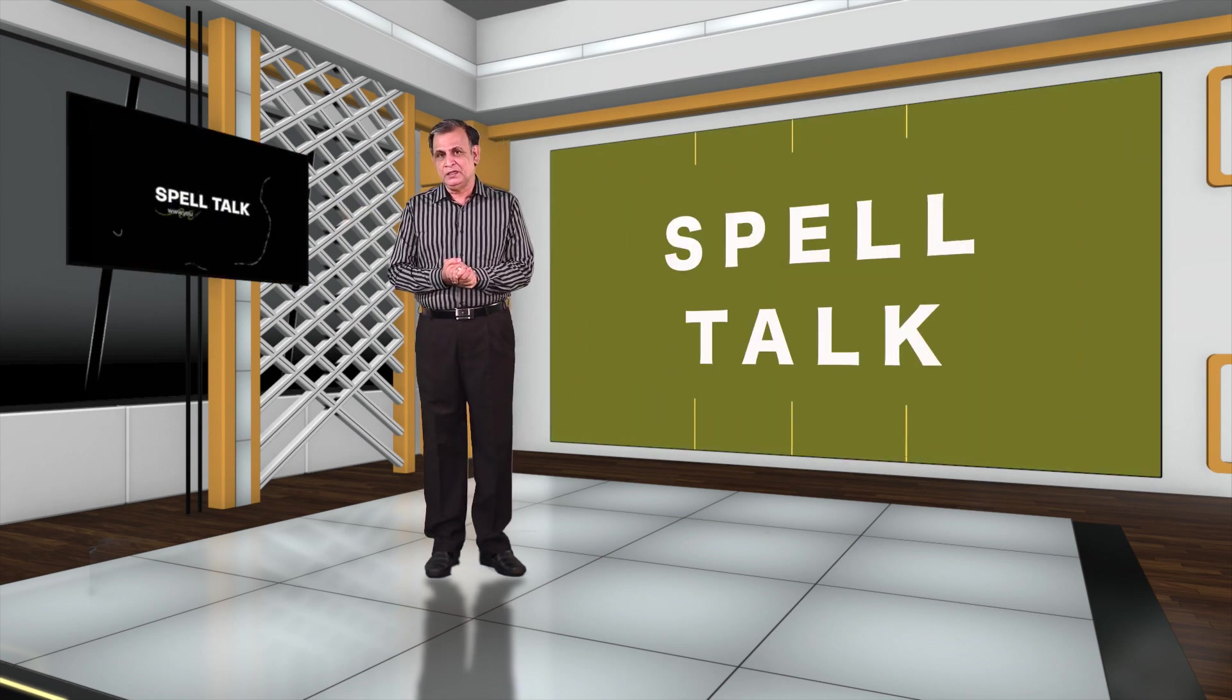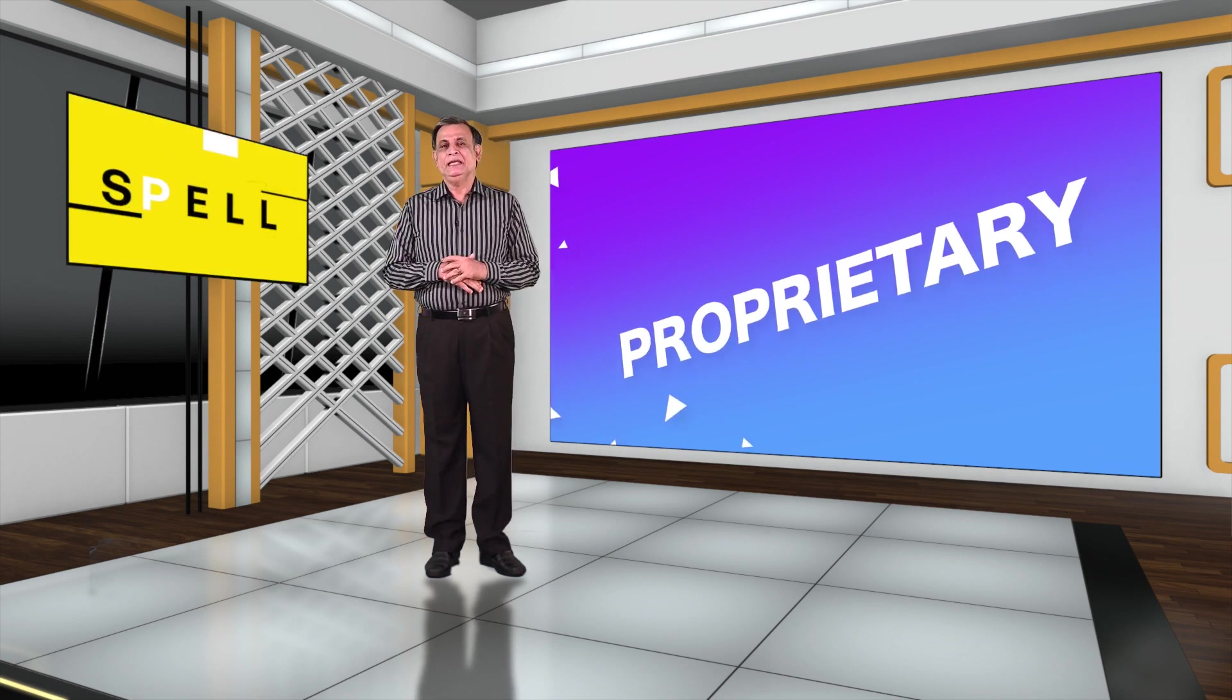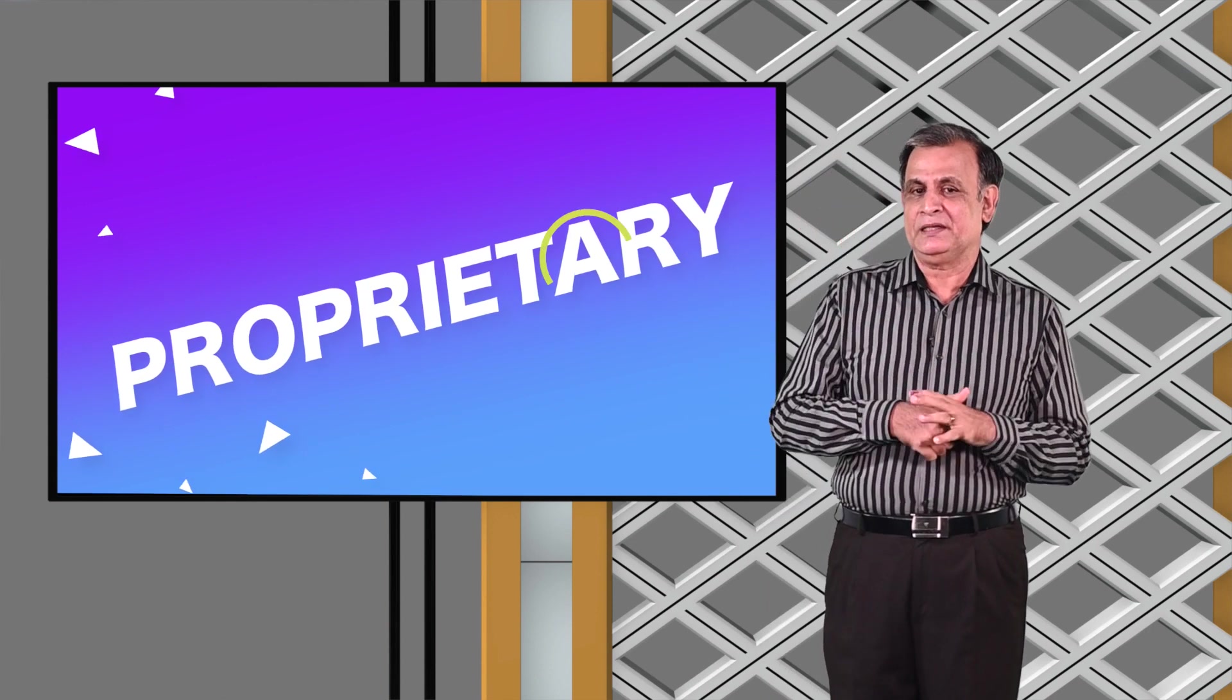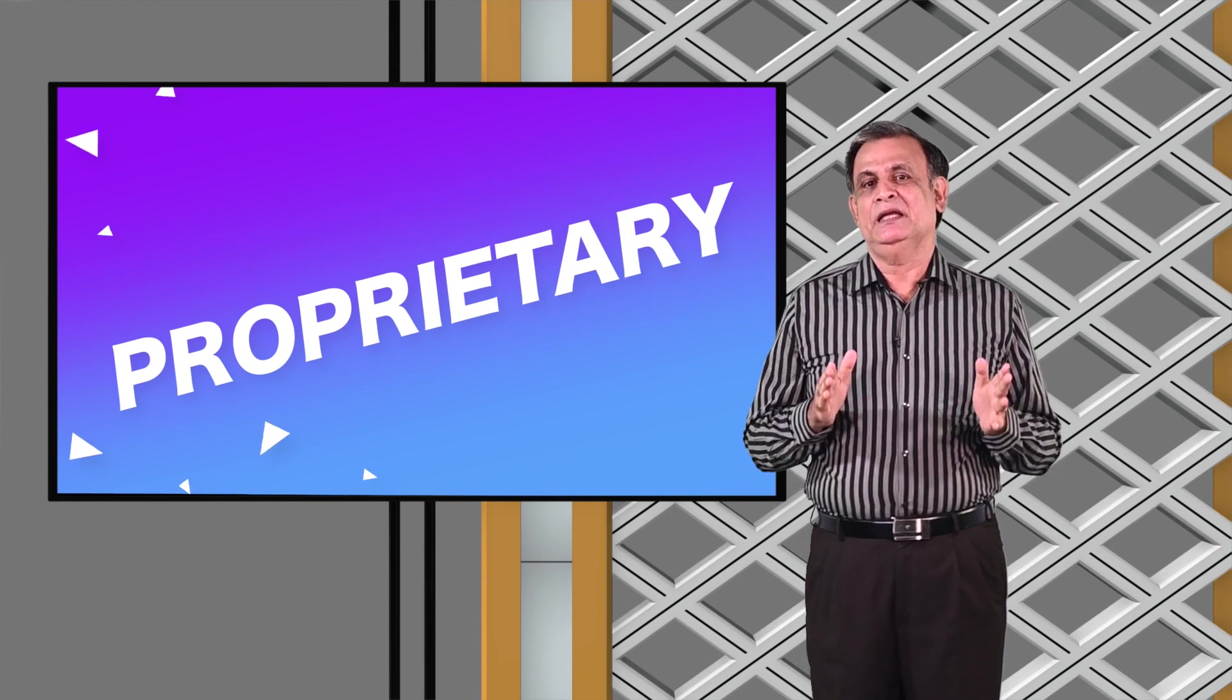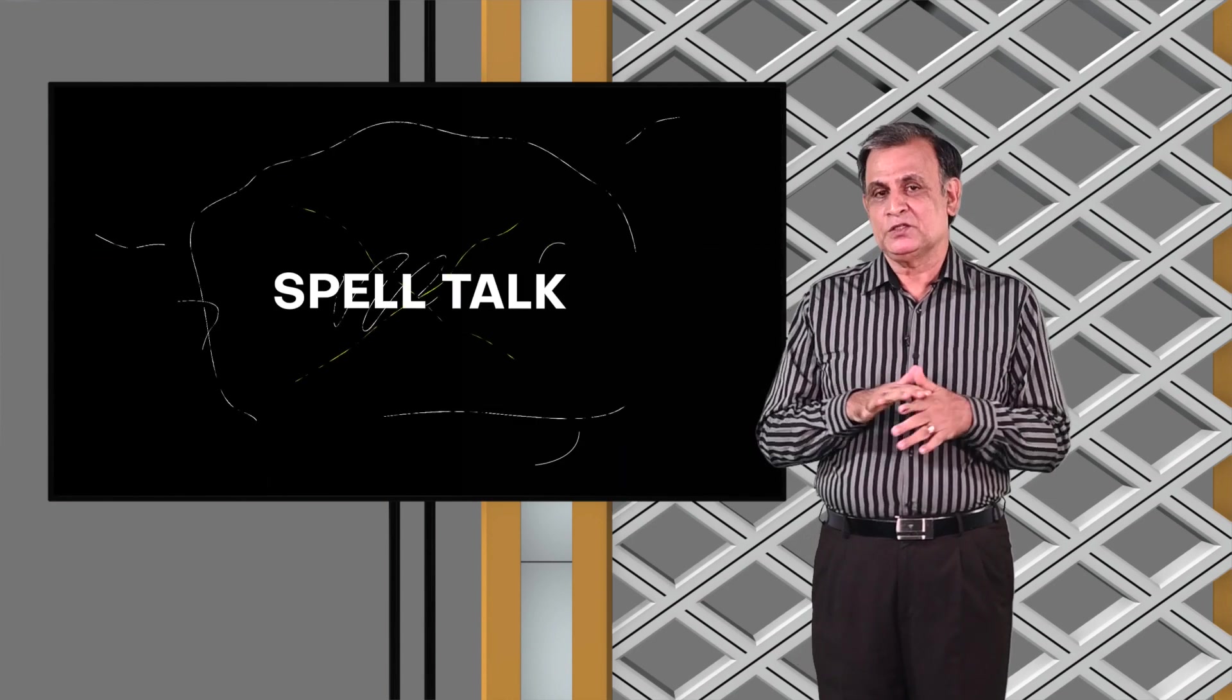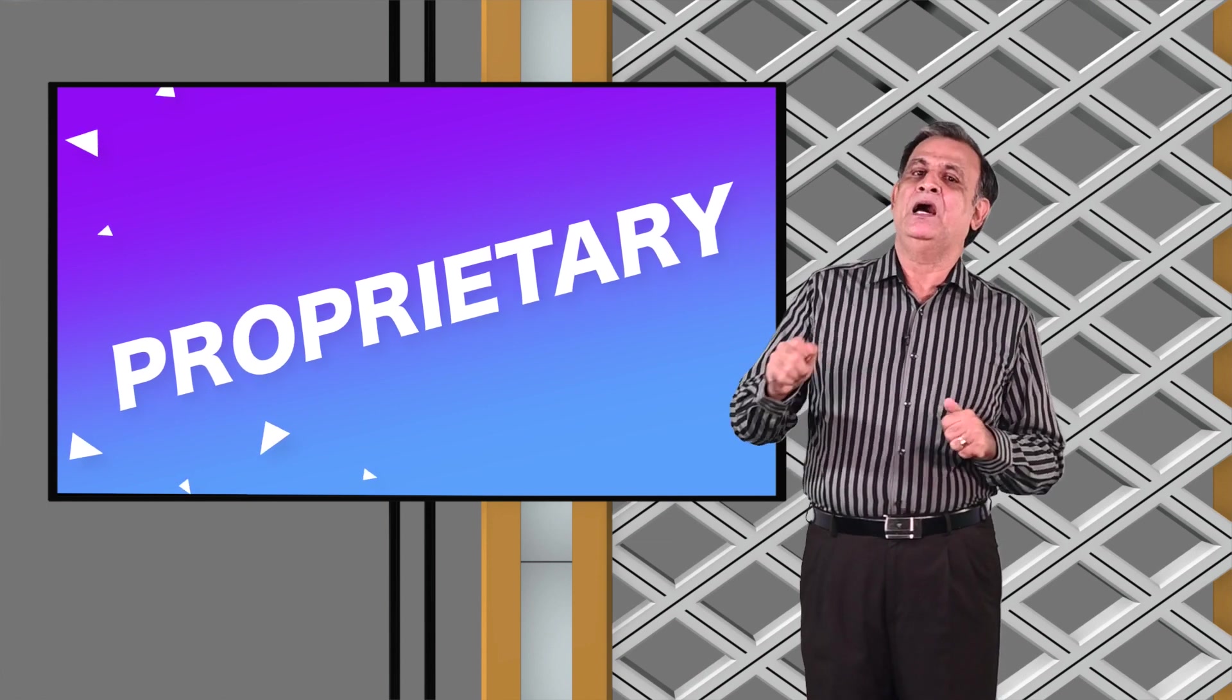Now let us move to another word: proprietary. The spelling is P-R-O-P-R-I-E-T-A-R-Y. The tricky area is the one letter A before R-Y. Proprietary means manufactured and sold by one particular firm under a trademark.